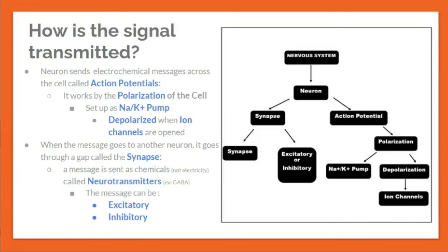Action potentials happen within a neuron from dendrite to axon terminal. Action potential works by polarizing a neuron — the electrical charge on the outside of the membrane is positive while the inside is negative. This polarization is maintained through the sodium-potassium pump, a form of active transport. When ion channels open due to a stimulus, the neuron goes from polarized to depolarized — positively charged ions rush into the cell, making it more positive, allowing a message to be sent.